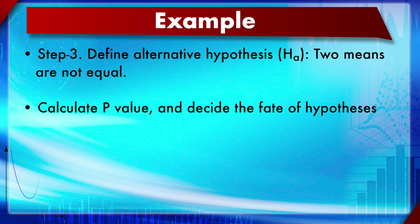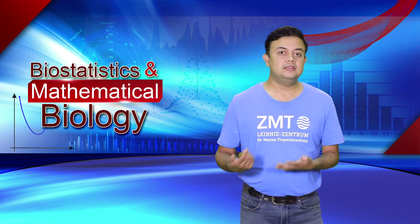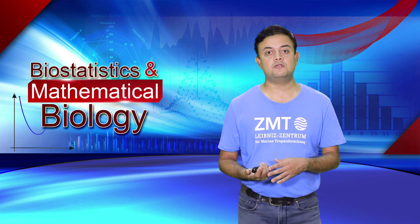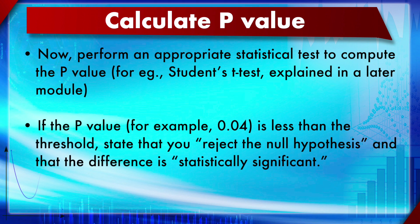To calculate the p-value you use a standardized test like Student's t-test, covered in a later module. Once you have your p-value, check if it is above or below 0.05. If less than 0.05 — for example 0.04 — you reject the null hypothesis and state the difference is statistically significant. Always write 'statistically significant,' not just 'significant,' as that would be ambiguous. If p = 0.06 (greater than threshold), you do not reject the null hypothesis.